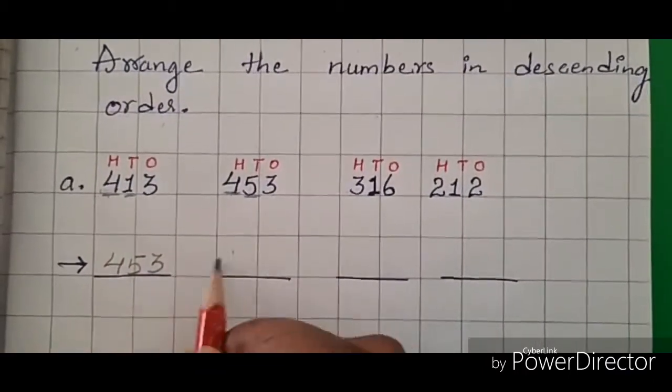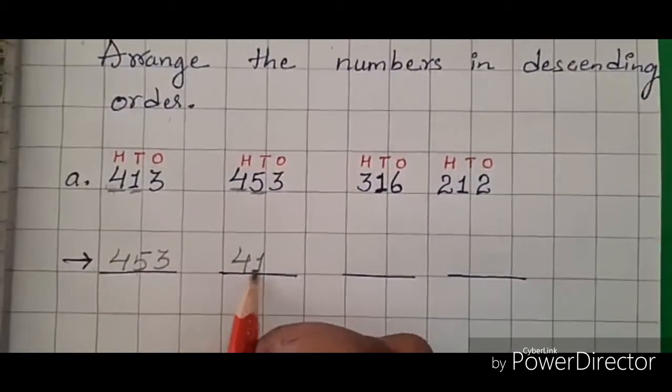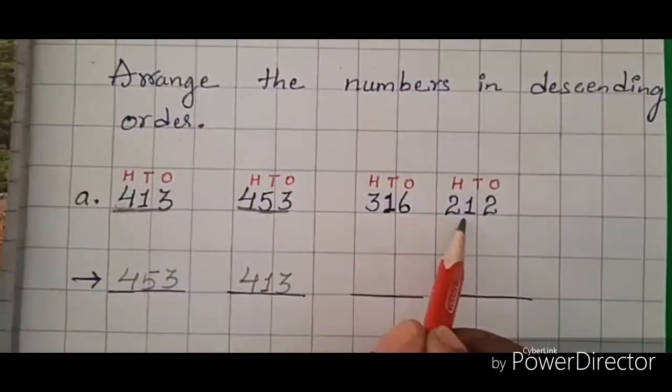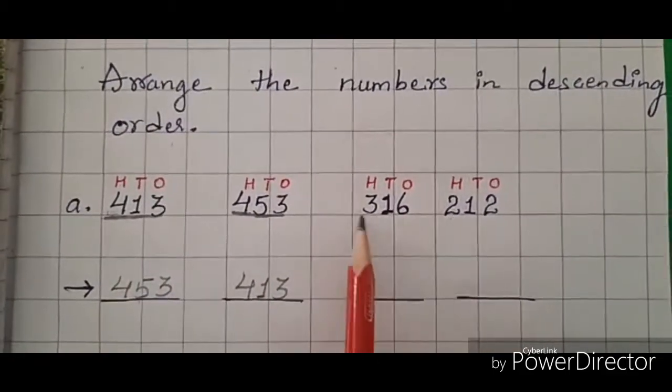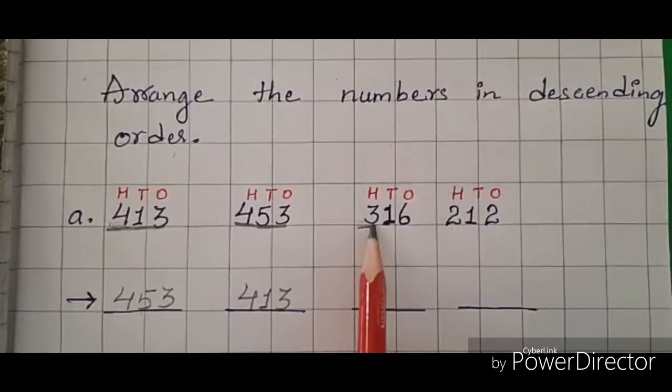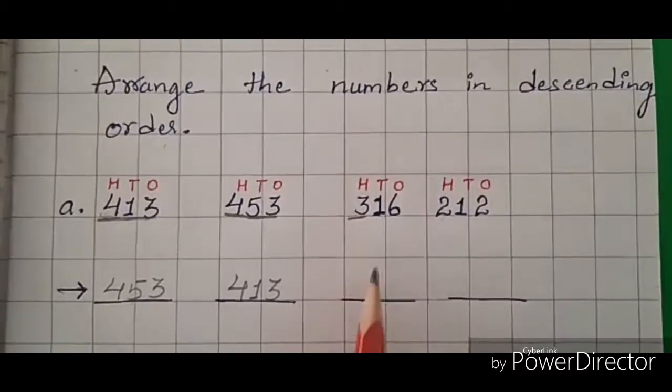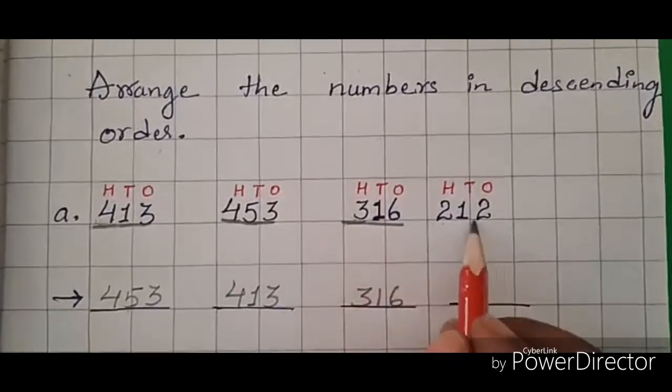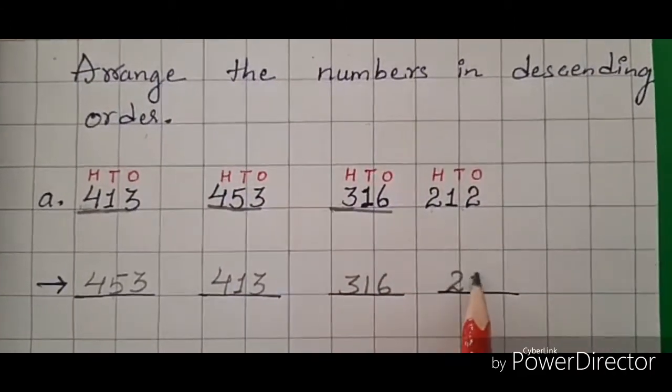Now in the next two numbers, which number is bigger in hundreds place? Yes, it is number 3, so the answer will be 316. And the last number left is 212.